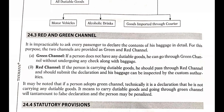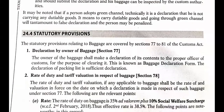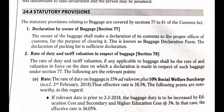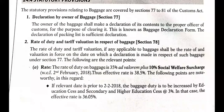The statutory provisions relating to baggage are covered under Sections 77 to 81 of the Customs Act. The first rule is declaration by the owner of baggage, stated in Section 77. The owner of the baggage shall make a declaration of its contents to the proper officer of customs for the purpose of clearing it. This is known as the baggage declaration form, and the declaration of the packing list is sufficient declaration.